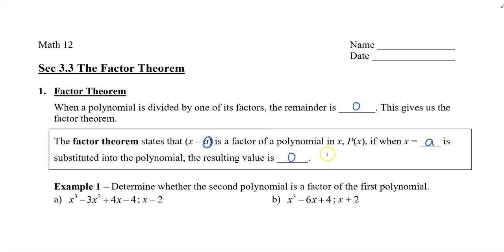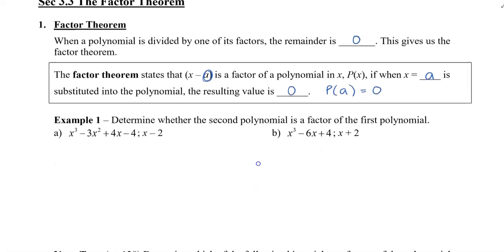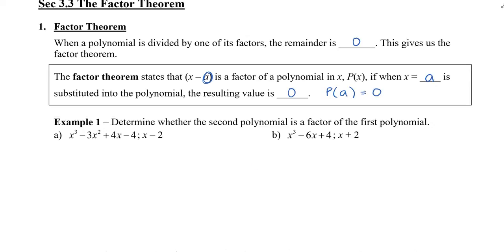So we can say that p of a — when I take the number a and plug it into the polynomial for all the x values — we should get 0. So let's take a look at an example. Determine whether the second polynomial is a factor of the first. We're trying to figure out whether x minus 2 is a factor of the bigger polynomial.